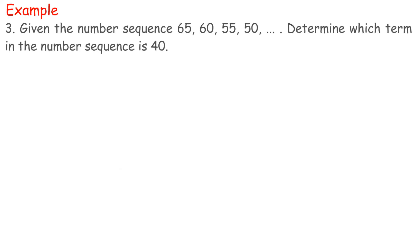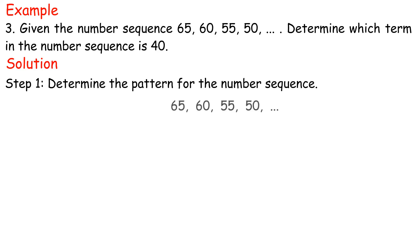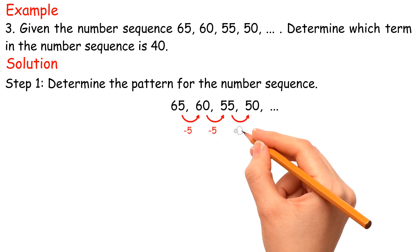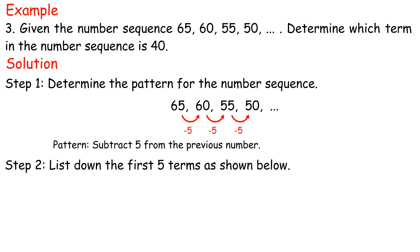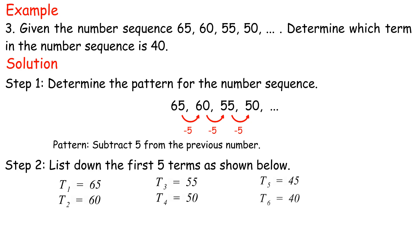Example 3: Given the number sequence 65, 60, 55, 50, determine which term in the number sequence is 40. Solution. Step 1: Determine the pattern for the number sequence. Pattern: Subtract 5 from the previous number. Step 2: List down the terms: t1 is 65, t2 is 60, t3 is 55, t4 is 50, t5 is 45, t6 is 40. Hence, 40 is the sixth term.